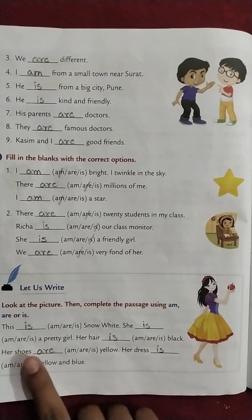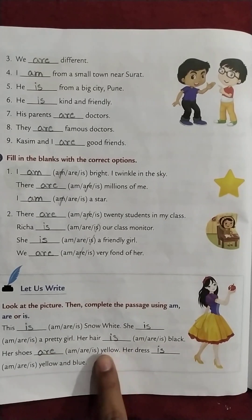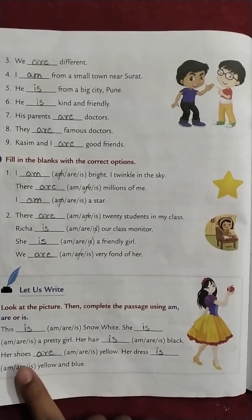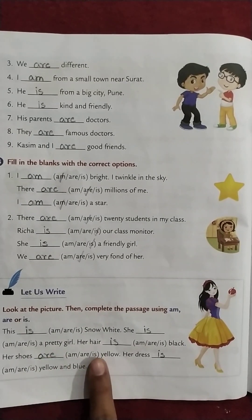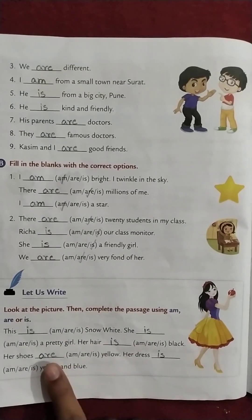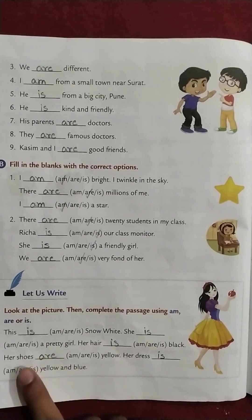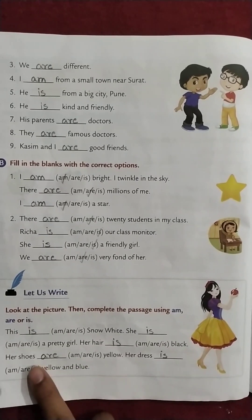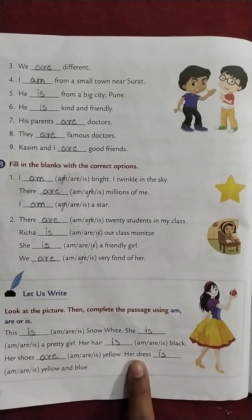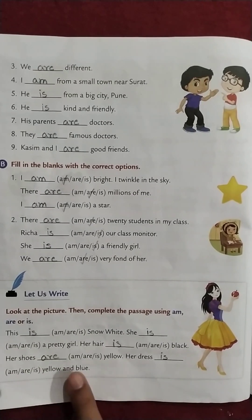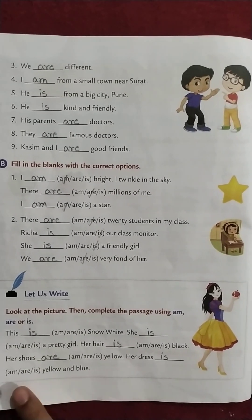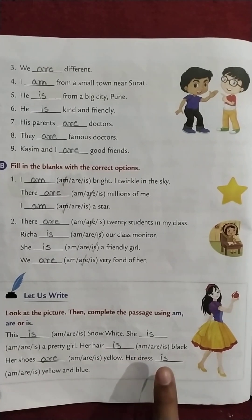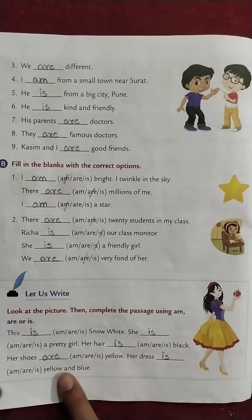Her shoes dash yellow — am, are, is — Her shoes are yellow. यहाँ पे are का यूज किया, क्योंकि shoes two है, many है, इसीलिए. Her dress dash yellow and blue — am, are, is — Her dress is yellow and blue.